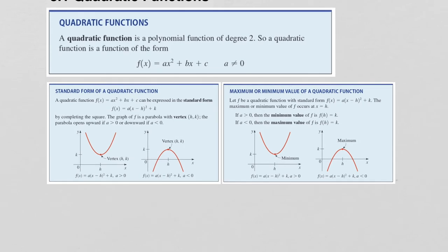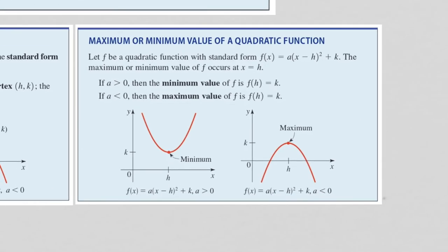In addition to that, we can talk about the maximum or minimum value of a quadratic function. Because the graph of a quadratic is a parabola, all parabolas that open upward will have a minimum value at the vertex. The coordinates of the vertex are h and k, and those values are found in the equation.